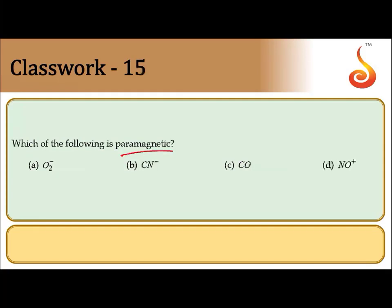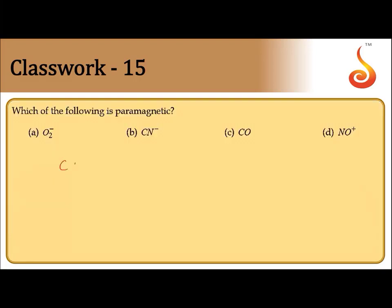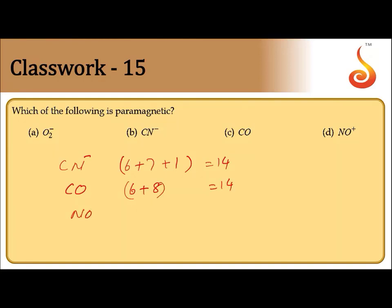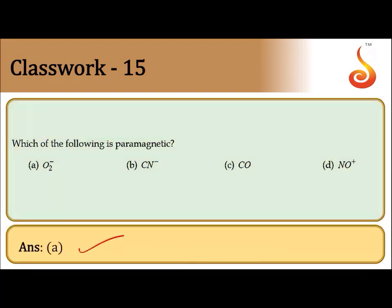Which of the following is paramagnetic in nature? According to MOT, O₂⁻ has one unpaired electron, making it paramagnetic. CN⁻ has 6+7+1=14 electrons, CO has 6+8=14 electrons, and NO⁺ has 7+8−1=14 electrons — all have an even number of electrons and are completely paired, hence diamagnetic. Therefore O₂⁻ is paramagnetic and the answer is option A.